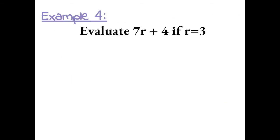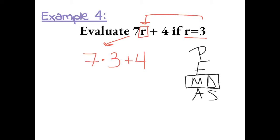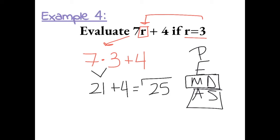Example 4: Evaluate 7r plus 4 if r equals 3. So if r equals 3, I can plug in 3 in place of the r. Remember, a number next to a variable means multiplication, so you should put a multiplication symbol in between both numbers when you replace the variable. Now to solve this expression, we need to use order of operations, or PEMDAS. PEMDAS tells us to do any multiplication or division before addition or subtraction. So first we do 7 times 3, which gives us 21. Then we add 21 plus 4, which gives us 25.